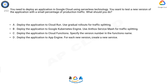A. Deploy the application to Cloud Run. Use gradual rollouts for traffic splitting. B. Deploy the application to Google Kubernetes Engine. Use Anthos Service Mesh for traffic splitting.